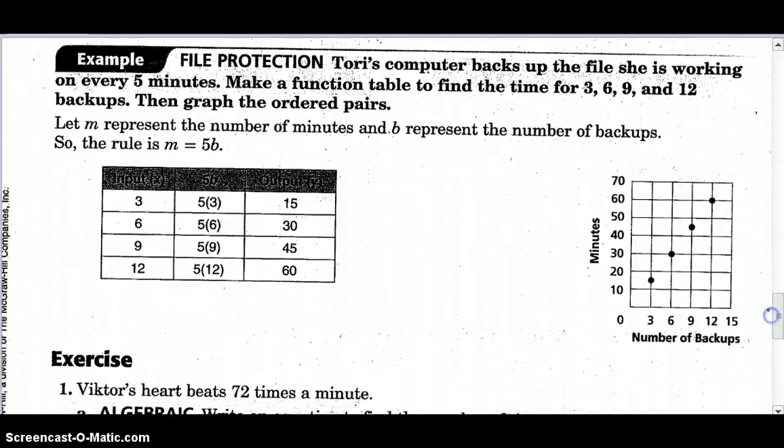So let's see about this example here. Tori's computer backs up the file she's working on every five minutes. So that means when there's been a backup, five minutes has taken place. So every five minutes, she's going to back up her file. Make a function table to find the time after 3, 6, 9, and 12 backups. So every time there's been a backup, five minutes has passed. So if she's had three backups, 15 minutes have passed, 6, 30, 9, 45, and so on and so forth. So that's our problem in words.